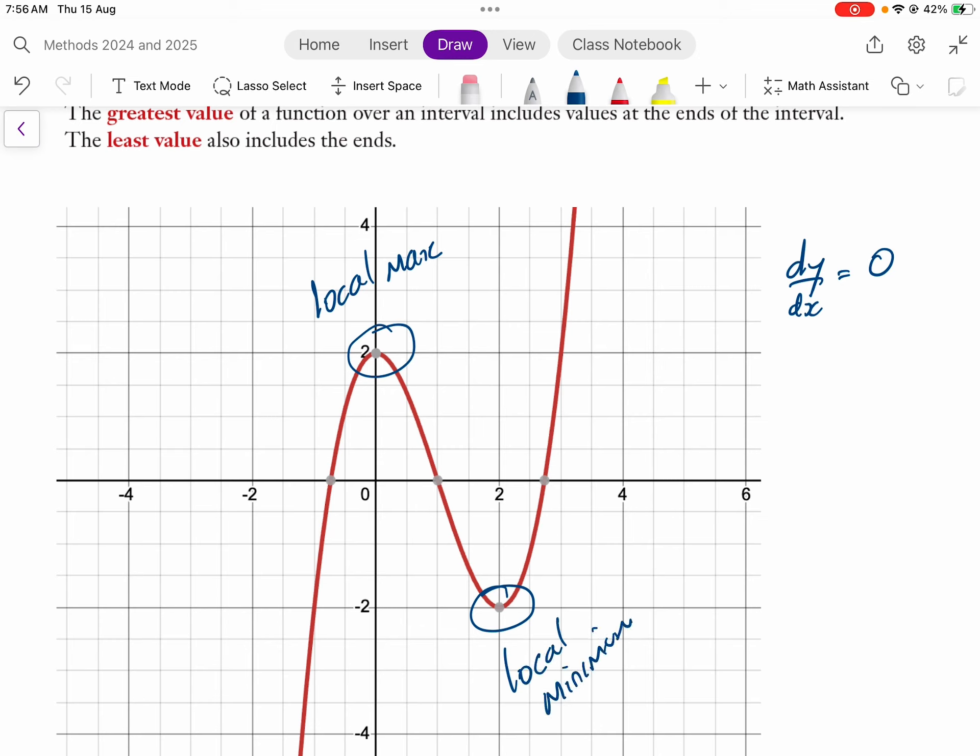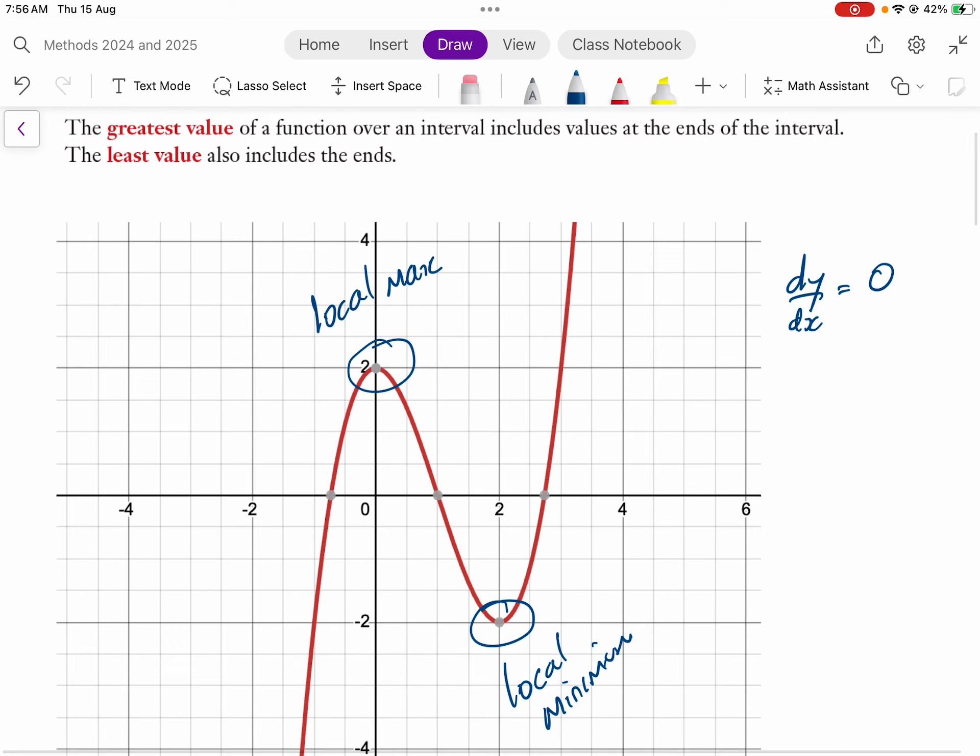Now if we're looking for the greatest or least value, it would depend on the domain that we're given. If we're given a domain, say from here to here, then they are definitely the highest and lowest point. However,